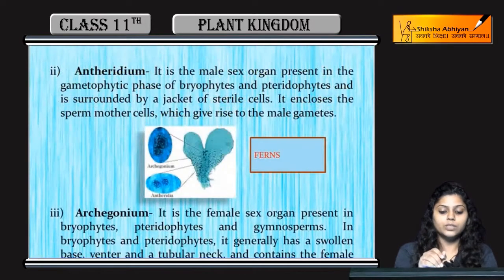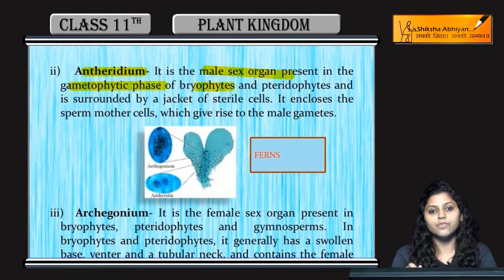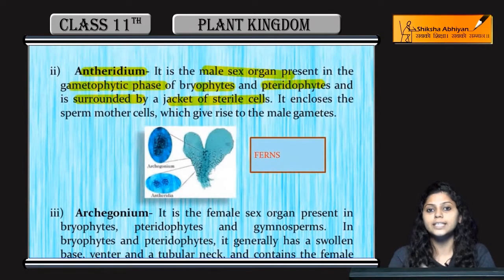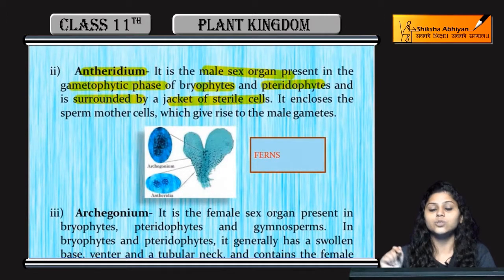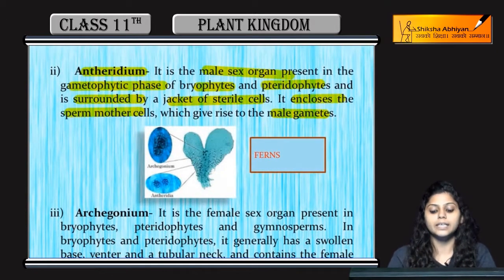Next, talking about the Antheridium. Antheridium is a male sex organ that is present in the gametophytic phase of bryophytes and pteridophytes. It is surrounded by a jacket of sterile cells — sterile cells being those which cannot perform reproduction. Antheridium produces male gametes and encloses the sperm mother cells.